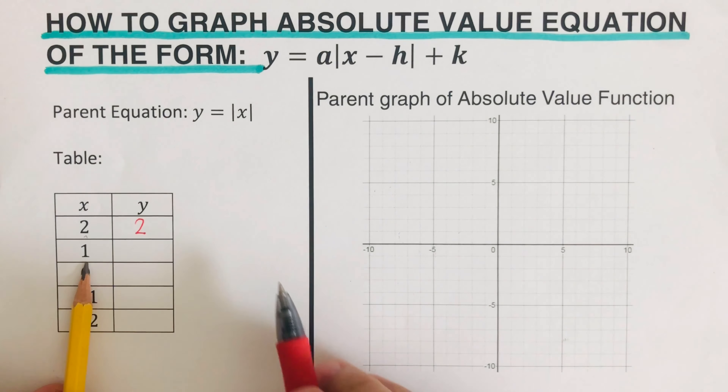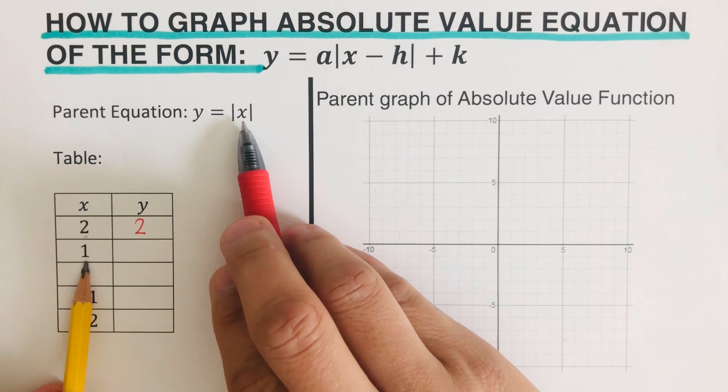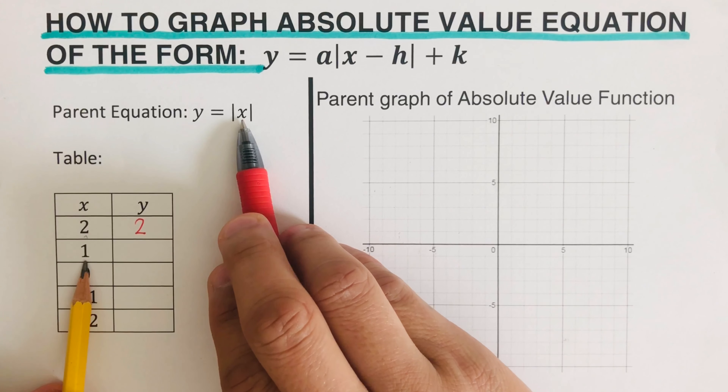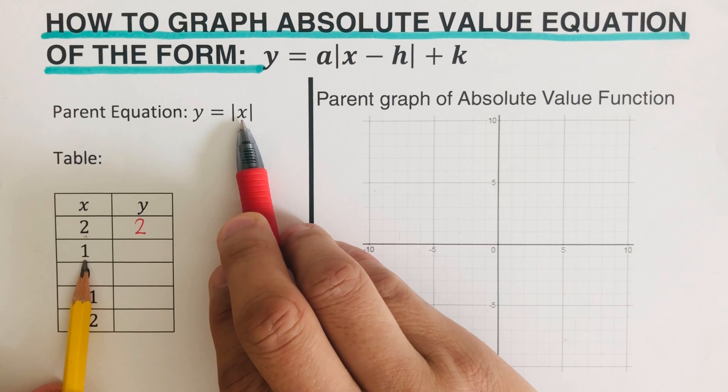Hello everyone. In this video, we are going to graph absolute value equations of the form y equals a times the absolute value of x minus h, plus k, where h and k are our locator points. Before we jump into an example, we are going to look into the shape of the parent graph of an absolute value function.